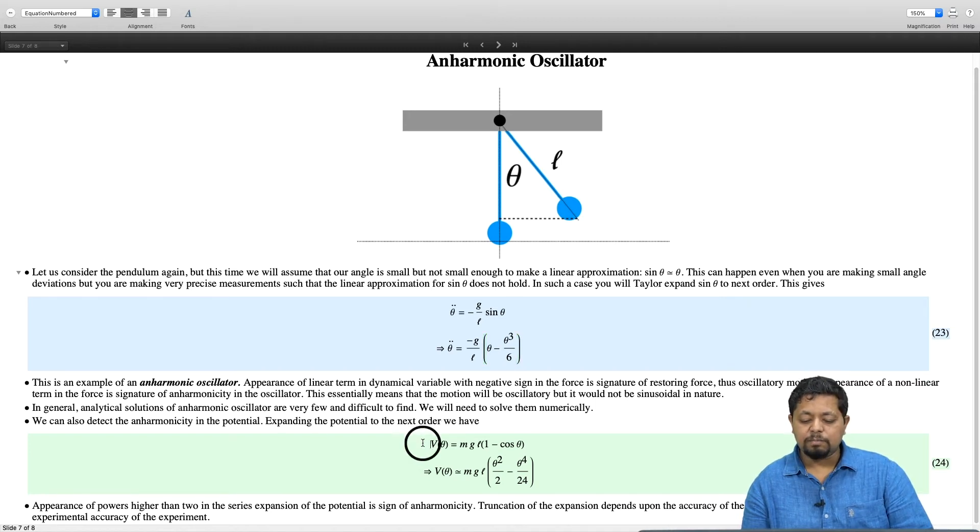The potential of course is MGL 1 minus cosine theta as we have talked about it before. Let us expand cosine theta in small angle approximation. The first term is 1, the second is minus theta square by 2 and the third is plus theta power 4 by 24. So, when I substitute that this is what I get for the potential MGL theta square by 2 minus theta power 4 by 24.